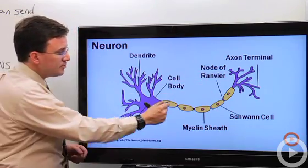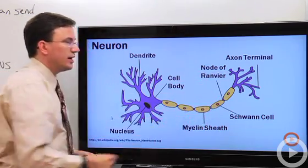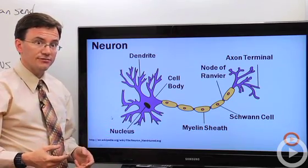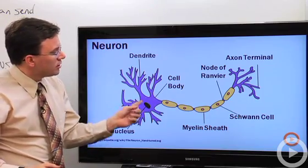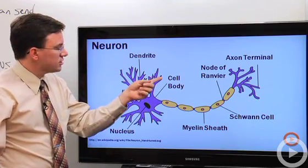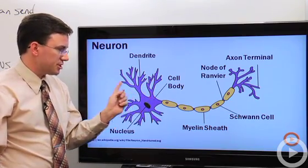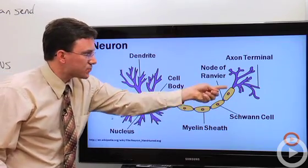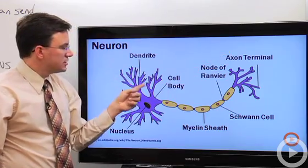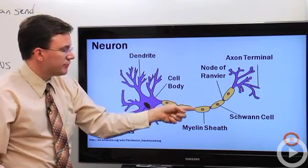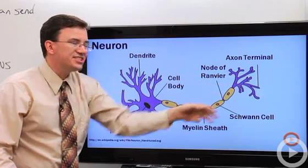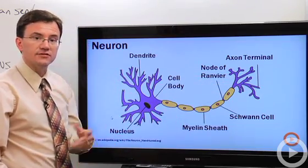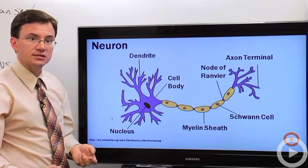In between each Schwann cell, you have these nodes. It's called nodes of Ranvier. Now that's French, it's not nodes of Ranvier, it's Ranvier. So an action potential or nerve signal will come along the dendrite, and then the cell body will say, yes, send it along. And it will go, and then along these action potentials travel along membranes, but they can jump from node to node to node. When they reach the end of the axon, called the axon terminal, then it has to use another means of communication to send its signal to the next cell.